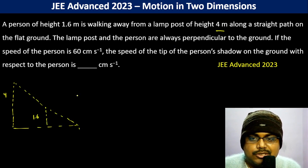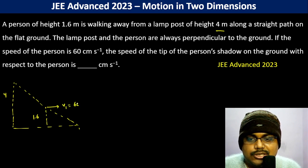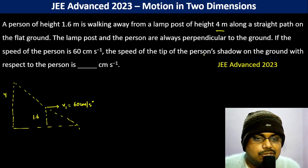The speed of the person is 60 centimeters per second. So the person is actually going, so let us say v1 is 60 centimeters per second.